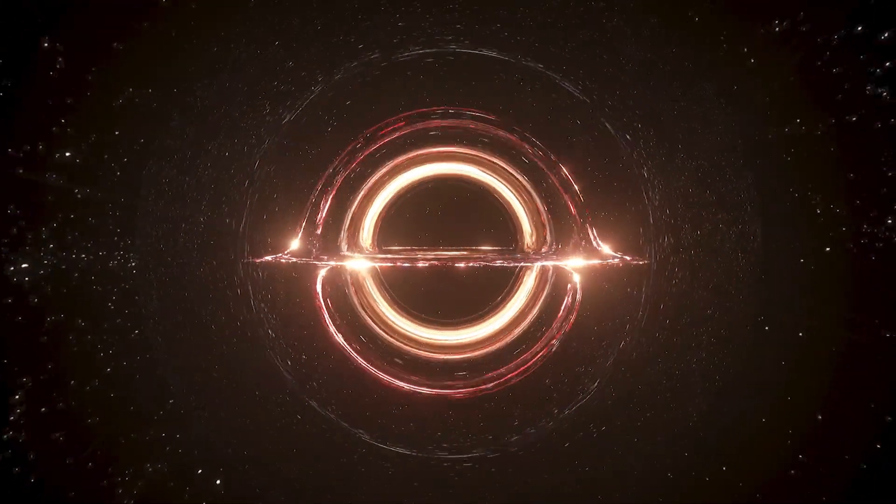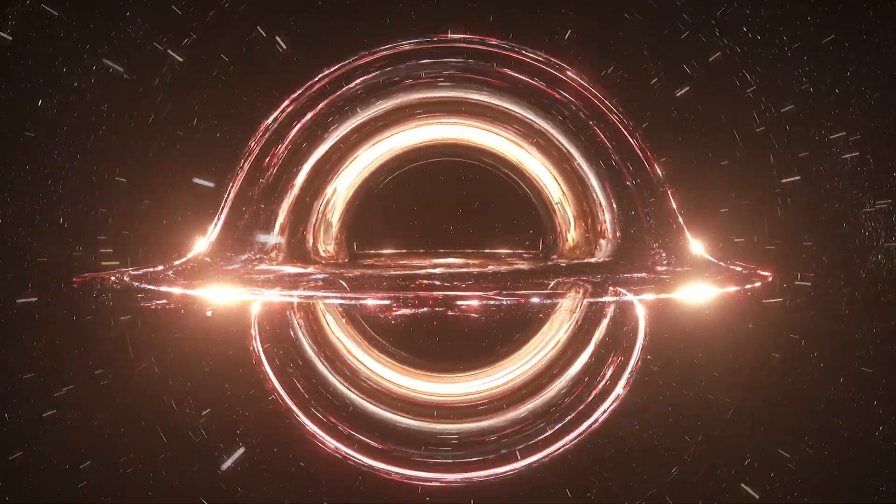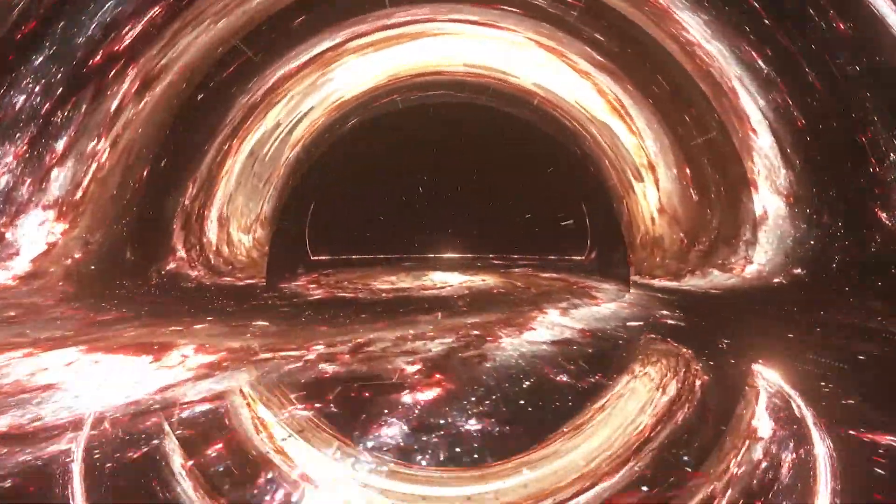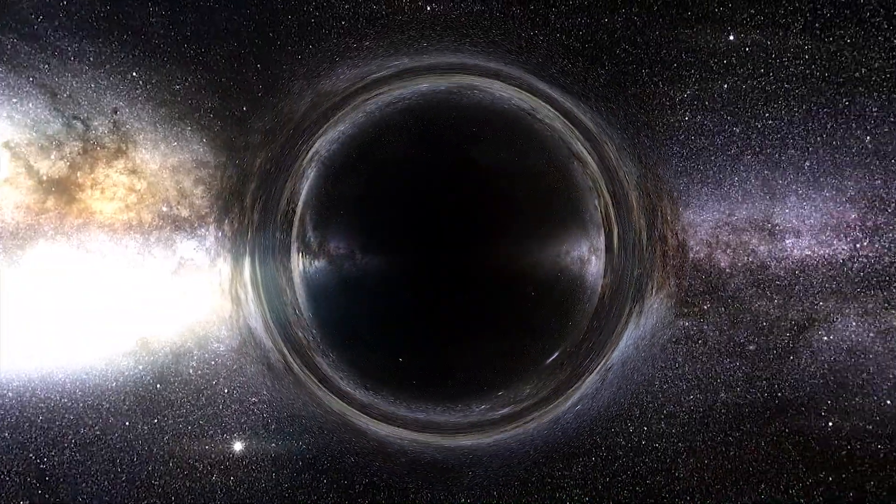When a black hole is 100 to 100,000 times more massive than the sun, it's called an intermediate mass black hole. They are heavier than stellar mass black holes, but lighter than supermassive black holes, which lie at the centers of galaxies.